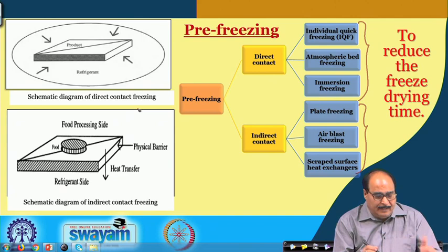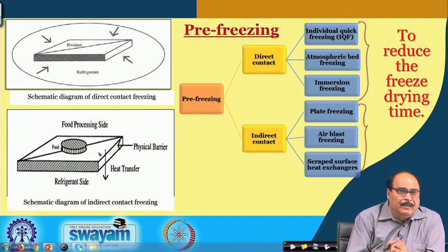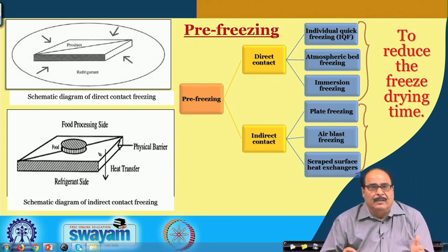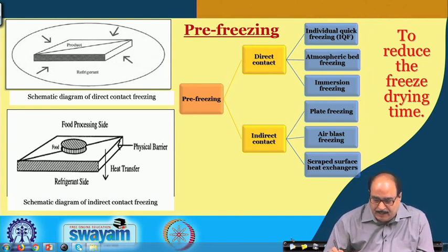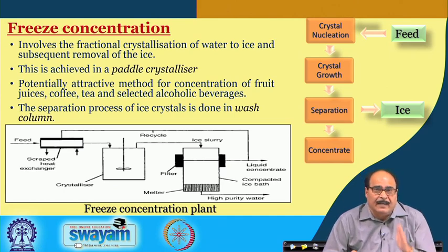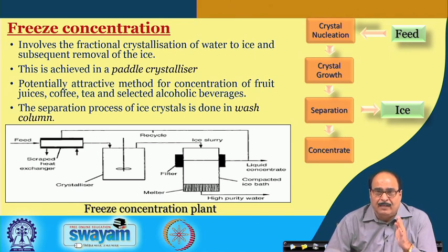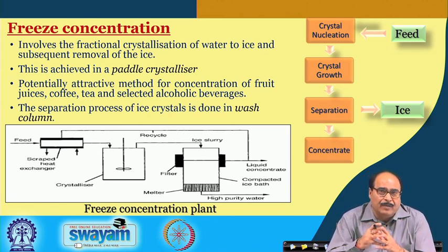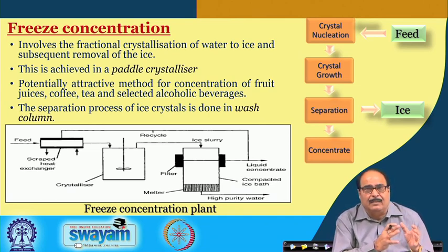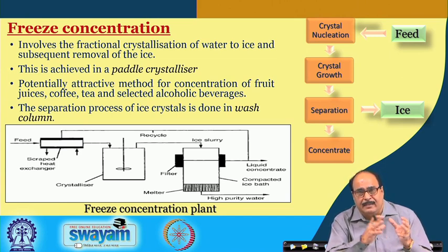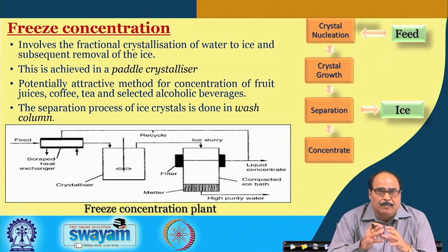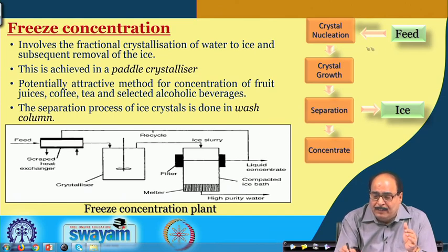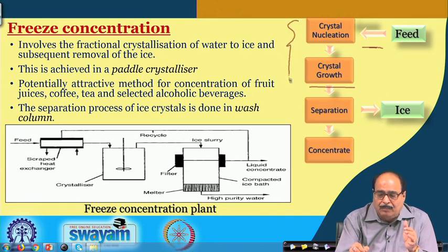For indirect contact freezing, plate freezing, air blast freezing, or scraped surface heat exchangers can be used. In indirect freezing, there is a medium involved between the freezing medium and the food — there is no direct contact, so heat transfer and physical barrier issues need to be resolved for process efficiency. Freeze concentration is another important aspect in freeze drying processes, particularly required to reduce the cost and improve process economy, since otherwise it becomes a very costly process to sublime moisture from the food material.